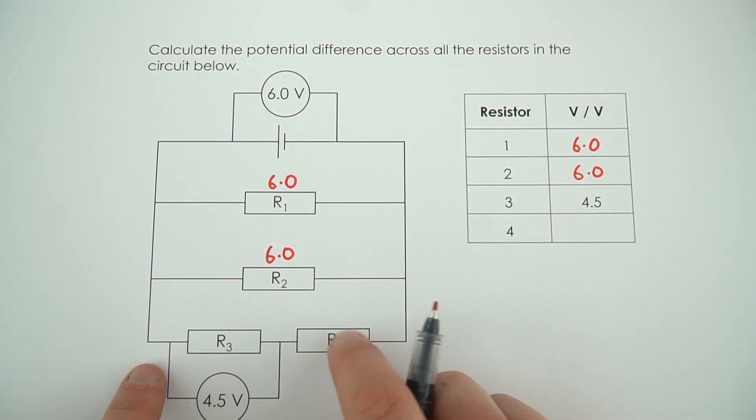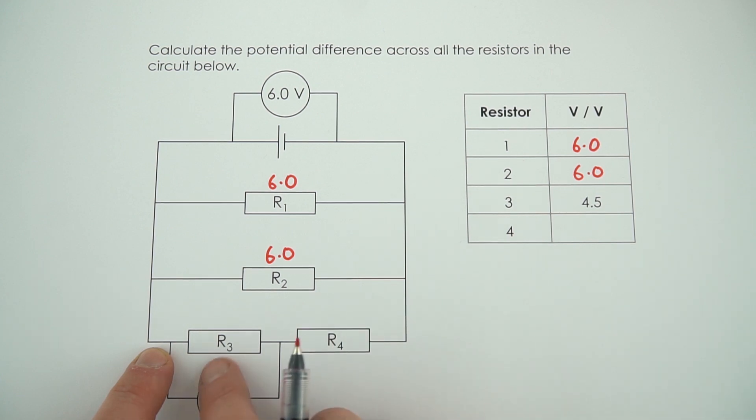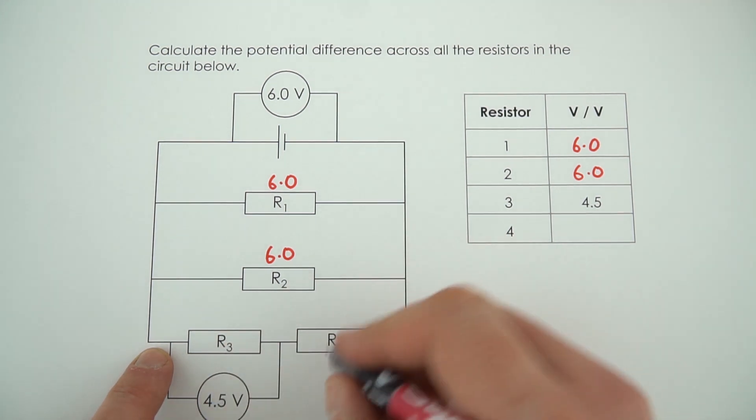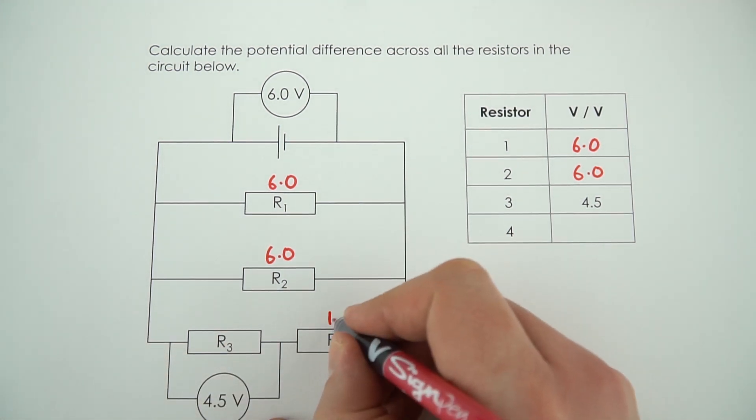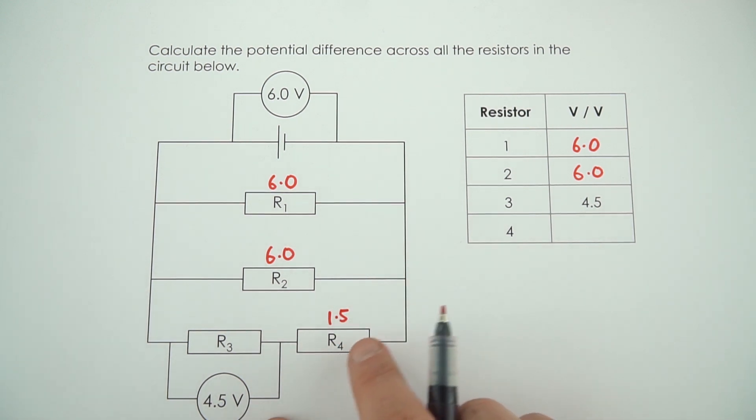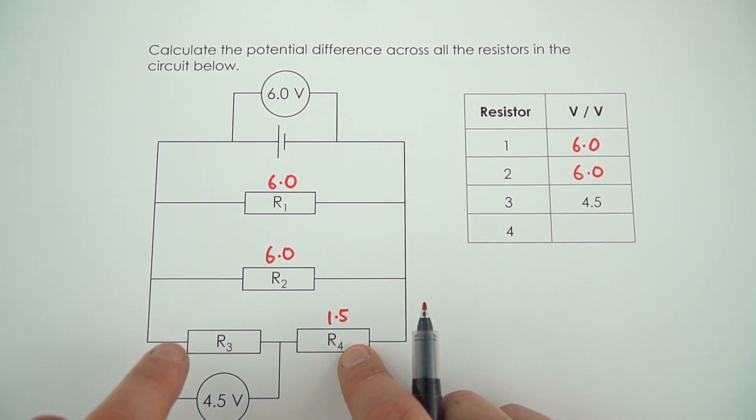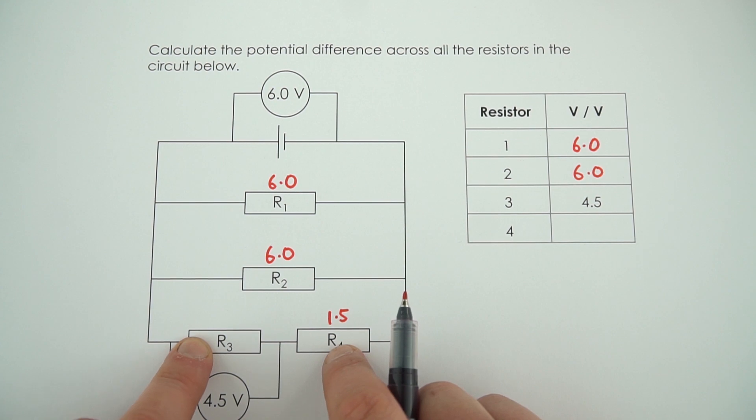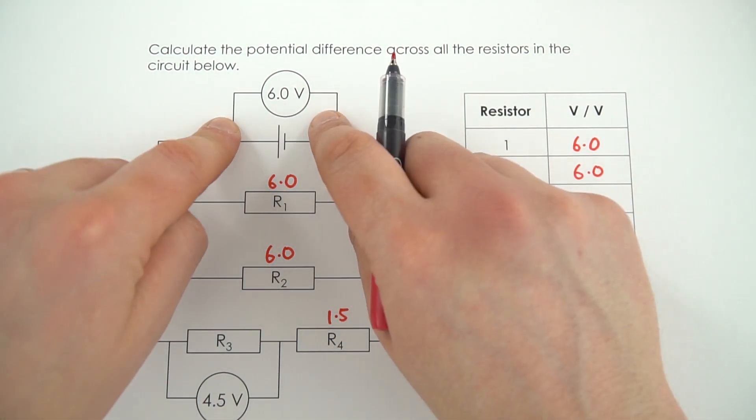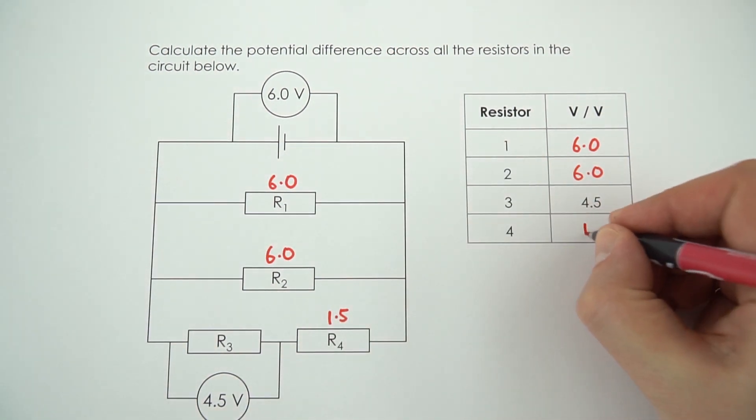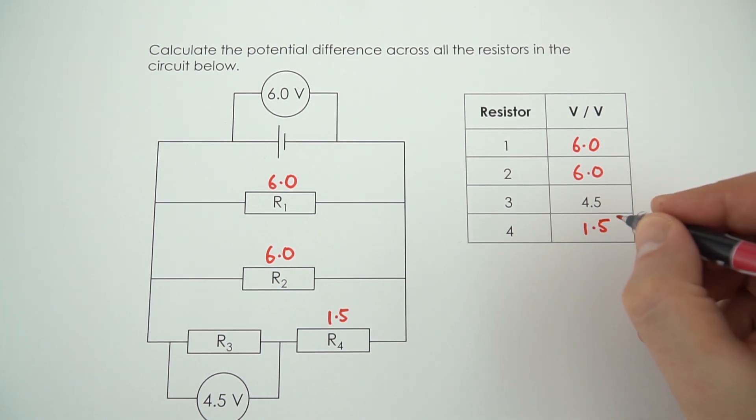And now for the last one, there's also going to be a value of 6 volts across these two resistors, but this one's already got 4.5 volts. So that means there's got to be a value of 1.5 volts left across R4 because that potential difference plus that potential difference must equal the potential difference across the cell. So that's why R4 is equal to 1.5 volts.